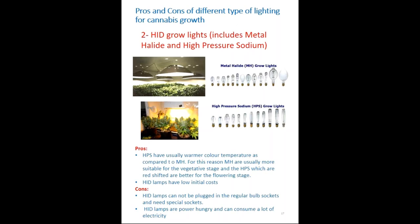Next are HID grow lights — high intensity discharge lamps — which include metal halide and high pressure sodium (HPS). Metal halide is more suitable for the vegetative phase, while HPS, which is red-shifted, is better for the flowering stage. HID lamps have low initial costs. The cons are that they require special sockets — they cannot be plugged into regular bulb sockets — and HID lamps are very power-hungry, increasing the electricity bill. However, for larger farms they may be useful.